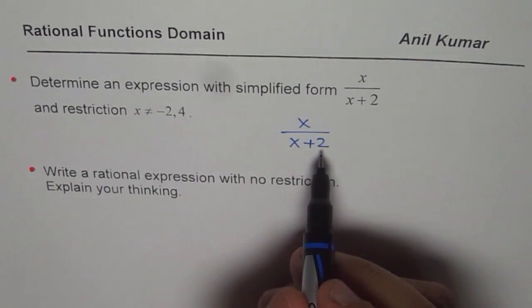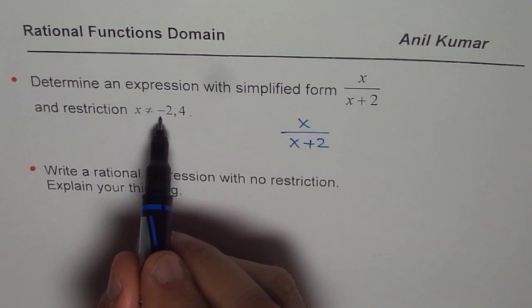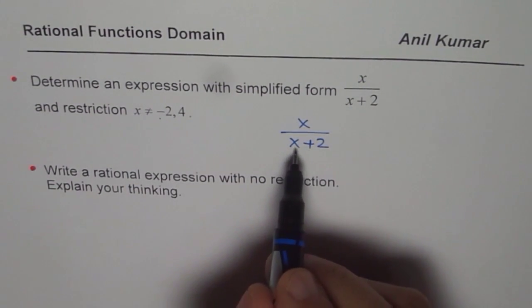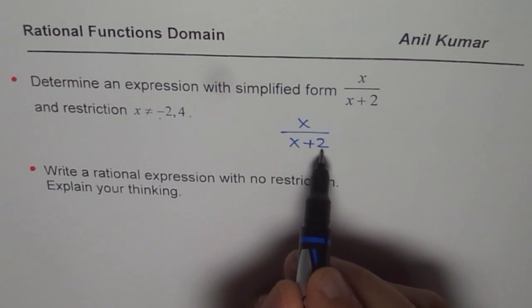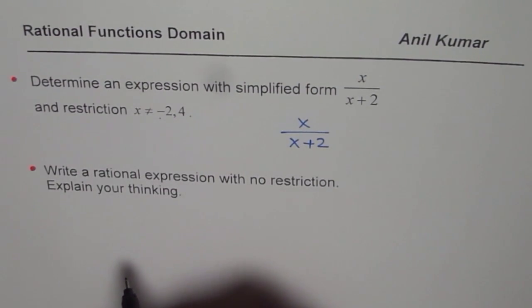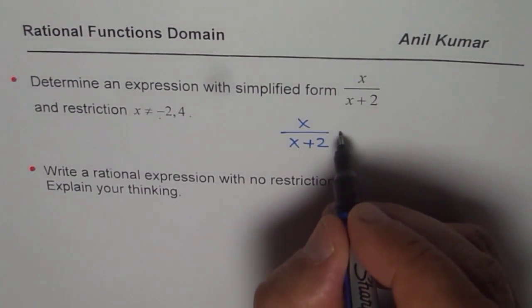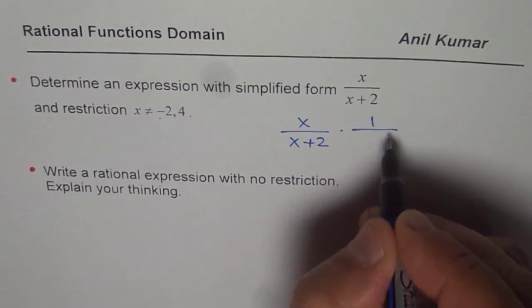Now, what we need is, restriction should be that x is not equal to minus 2 and 4. So, here x is not equal to minus 2 is apparent. But how about the other restriction? For the other restriction, we need another factor. So, I could multiply this by x minus 4, right?